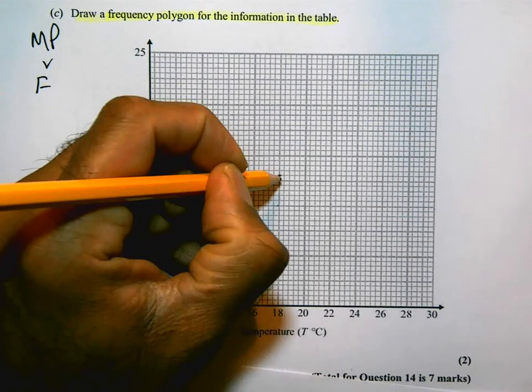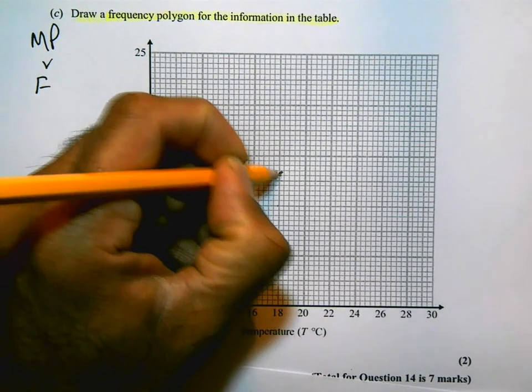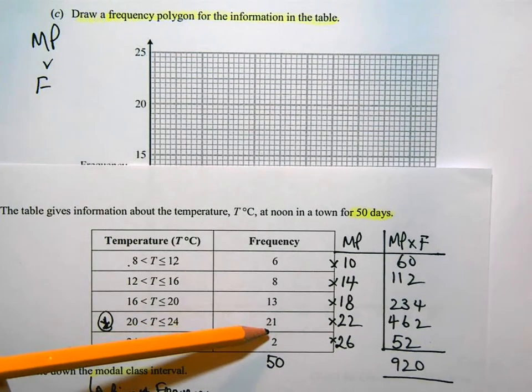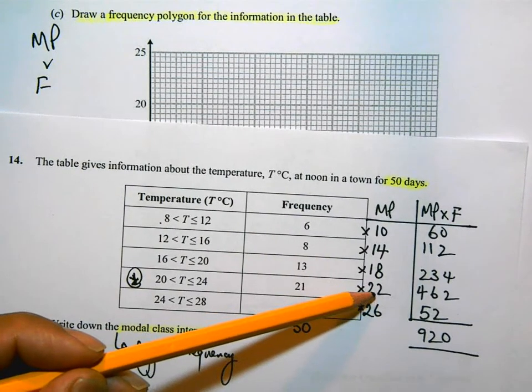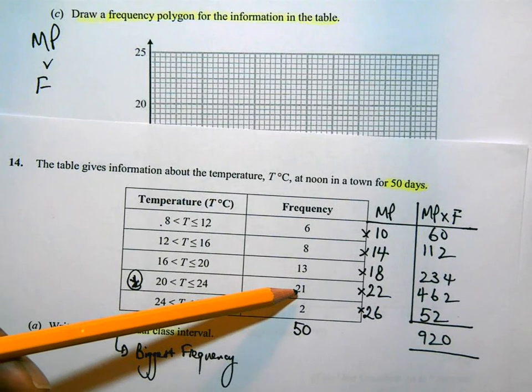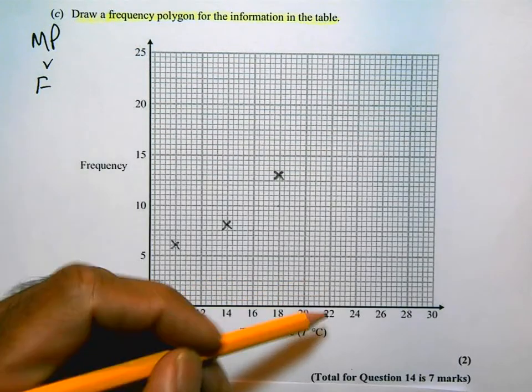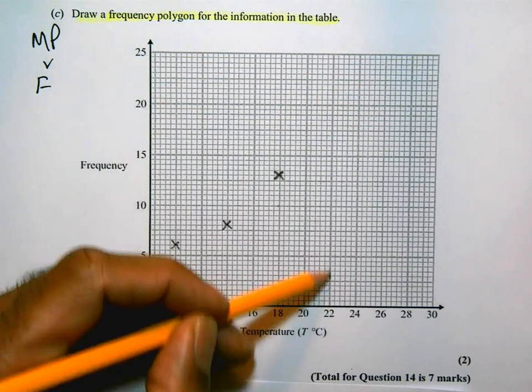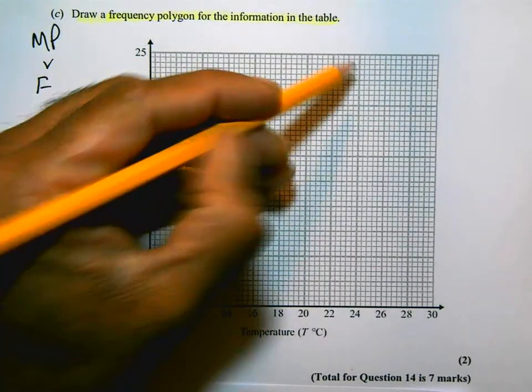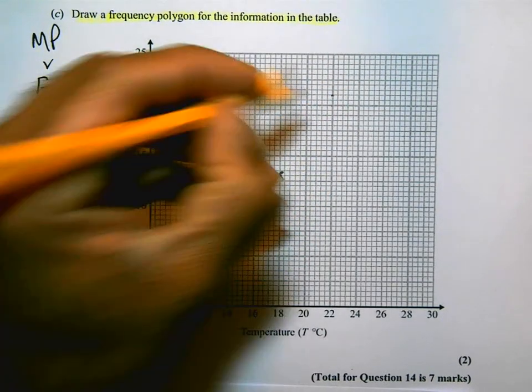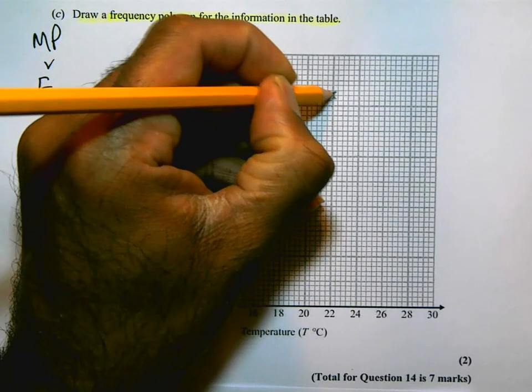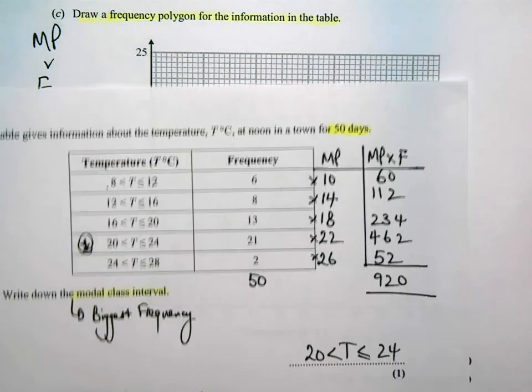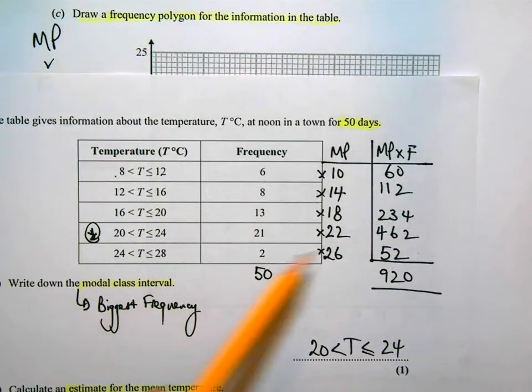Then I go up to midpoint 22, frequency 21. The midpoint is 22 and the frequency is 20 and then 1. And finally, midpoint 26, frequency is 2. The midpoint is 26 and 1, 2.